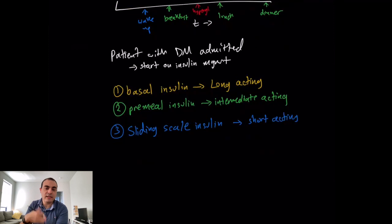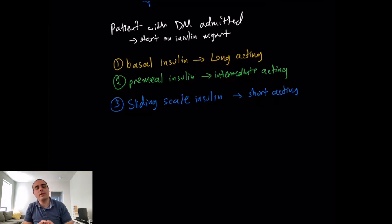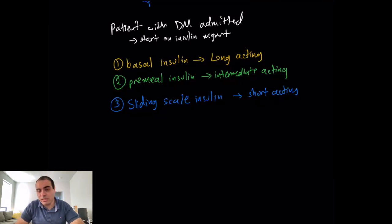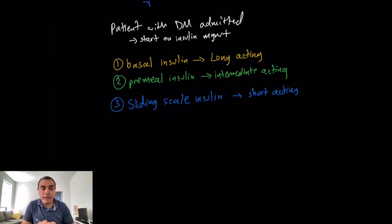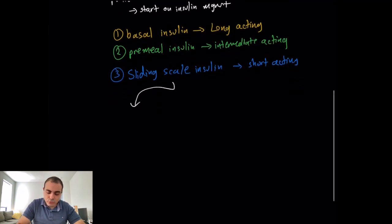When you see a diabetic patient, you can be proactive — covering them with basal, pre-meal, and sliding scale insulin from the start. Or you can be reactive: start them on a sliding scale only, then at the end of the day calculate how much insulin they needed and add that as a long-acting basal dose. There are two schools of thought: proactive or reactive.